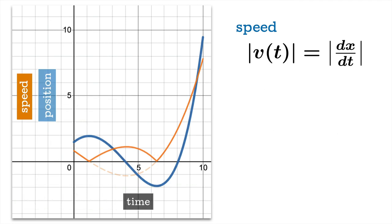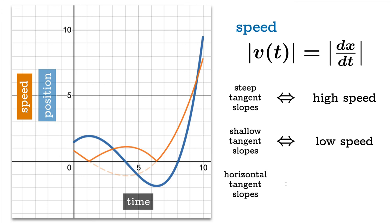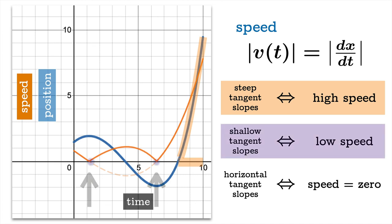So steep tangent slopes correspond to high speed. Shallow tangent slopes correspond to low speed. Horizontal tangent slopes correspond to moments where the speed is zero. So let's look at this graph again. We'll look at the part of the graph where the tangent slopes are relatively steep. We'll look at the portion of the graph where the tangent slopes are relatively shallow. And we'll recall the two moments where the tangent slopes are horizontal. Slope zero.